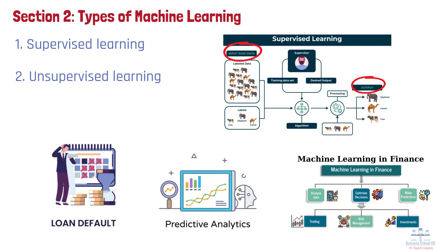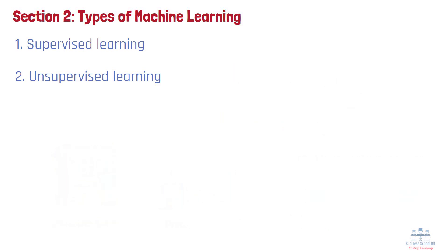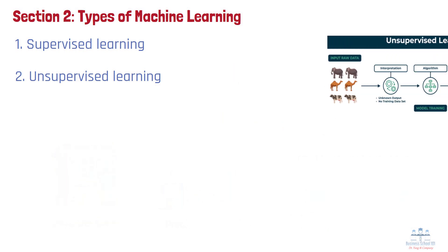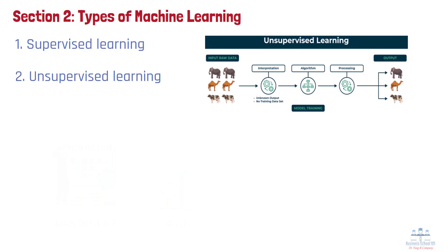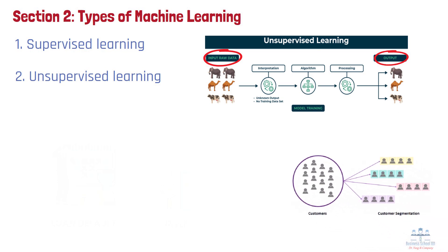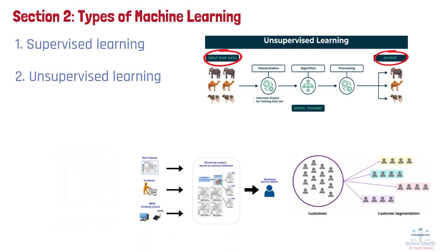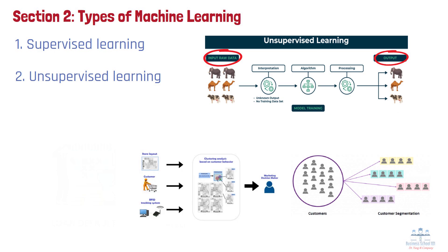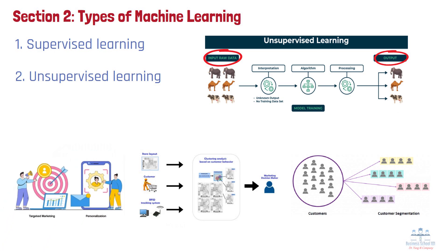Number 2: Unsupervised Learning. In unsupervised learning, the model is provided with data that lacks explicit labels. The system's objective is to infer the natural structure present within a set of data points. A practical application of this is in retail, where unsupervised learning techniques are used for customer segmentation. By analyzing purchase histories and browsing patterns, the system clusters users with similar behaviors, enabling retailers to implement targeted marketing strategies, recommend products, and enhance customer satisfaction.